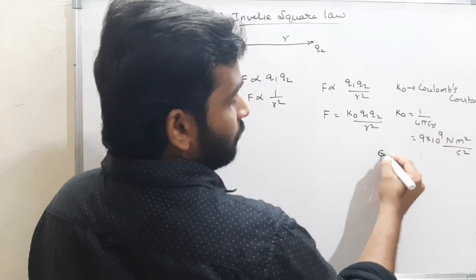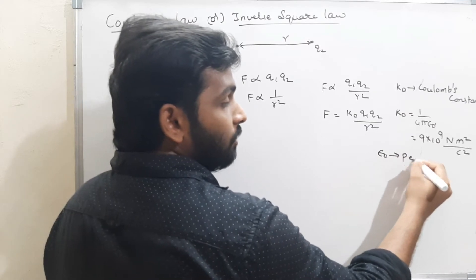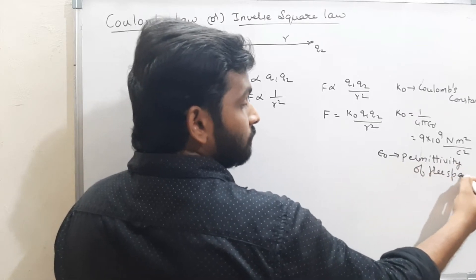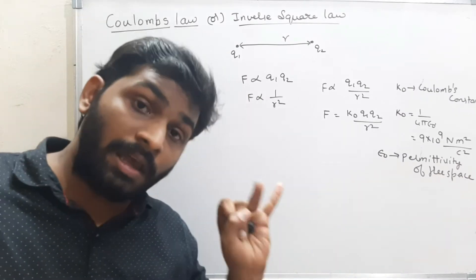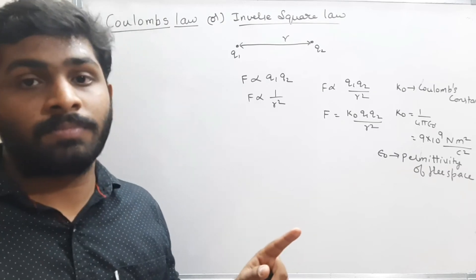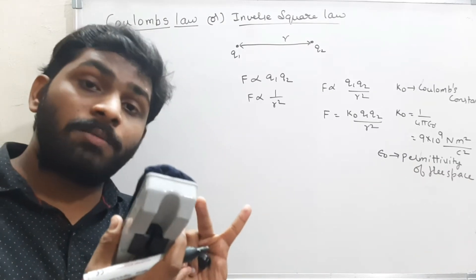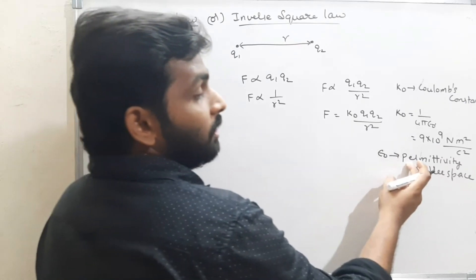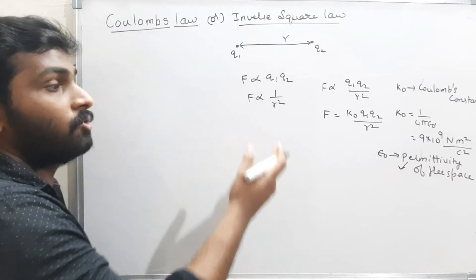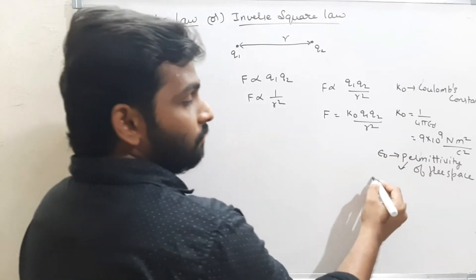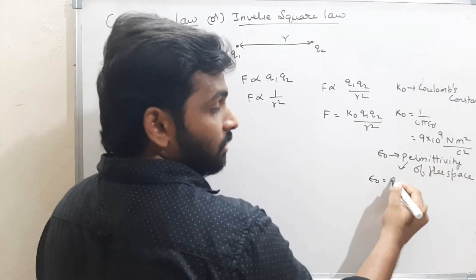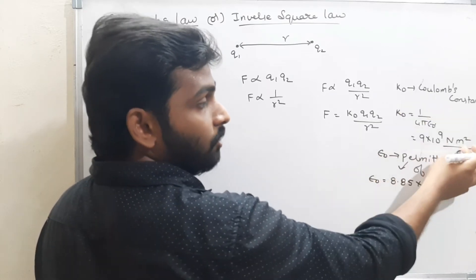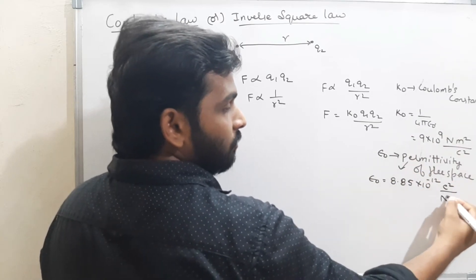What is epsilon naught (ε₀)? Epsilon naught is the permittivity of free space. In physics, free space, air medium, and vacuum are all assumed to be the same. The value of the permittivity of free space is 8.85×10⁻¹² C² per Newton meter squared. Since K0 and ε₀ are inverses, their units are reversed.